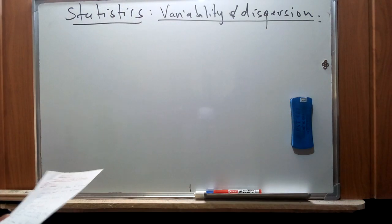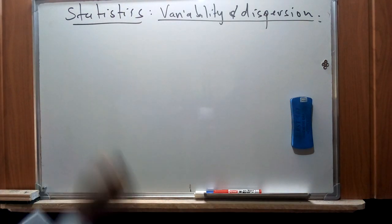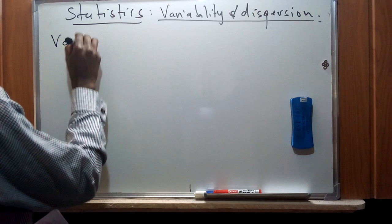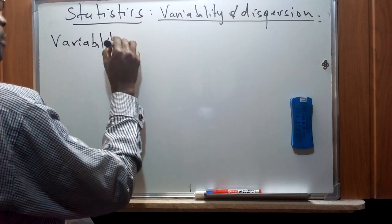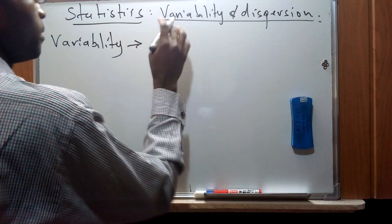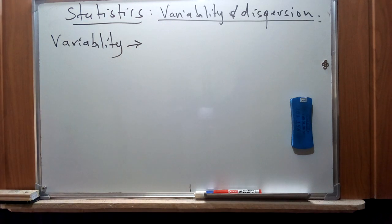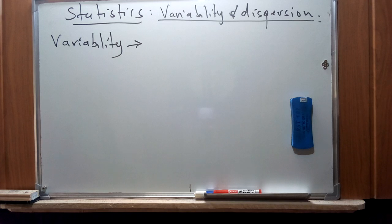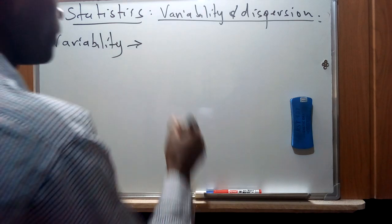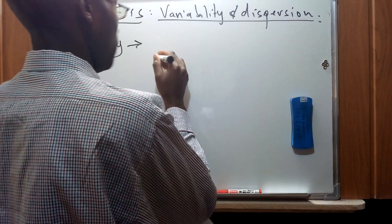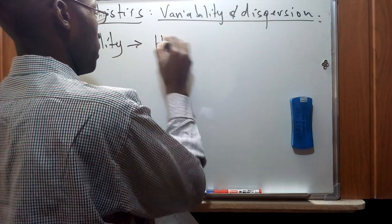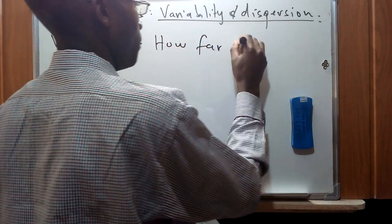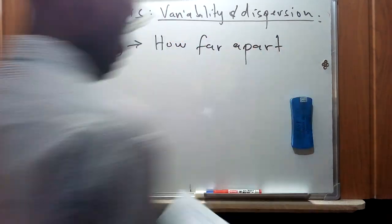Now let's look at what the concept of variability and dispersion means. Variability refers to how far apart data points lie from each other and from the center of distribution.